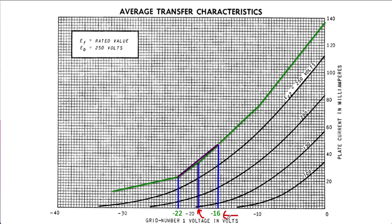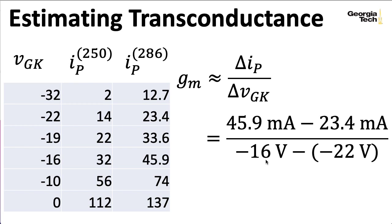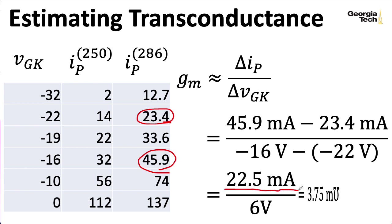So I would like to estimate the transconductance associated with a grid to cathode voltage of minus 19 volts. So I picked 3 volts one direction and 3 volts the other direction for minus 16 and minus 22 volts. I read off the appropriate plate currents for those values. So I could estimate the transconductance by taking these finite differences. I have minus 16 volts minus minus 22 volts in the denominator, which would give me 6 volts. And then in the numerator here, I read off values of 45.9 and 23.4 milliamps, giving me 22.5 milliamps in the numerator, giving me an estimate of 3.75 millimhos.